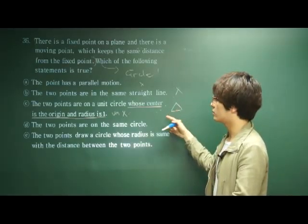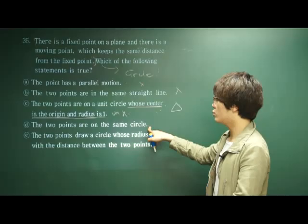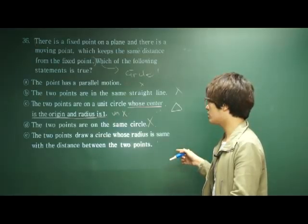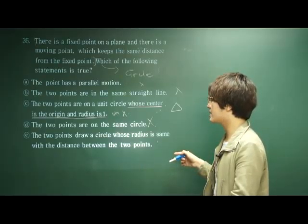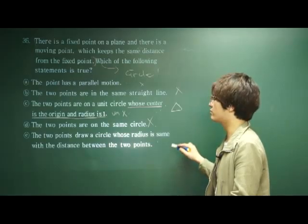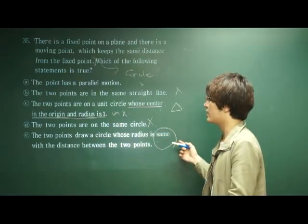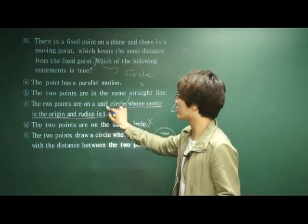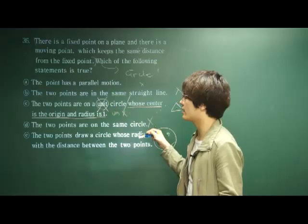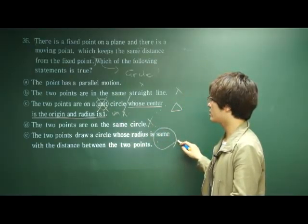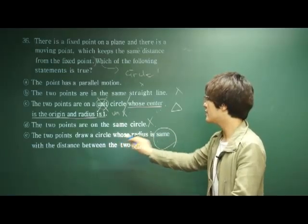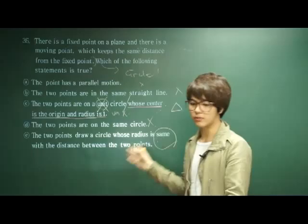D: the two points are on the same circle — nope. E: the two points draw a circle whose radius is the same as the distance between the two points. E is correct. C was half correct — the unit circle part is wrong. So the best answer is E: the two points draw a circle whose radius is the same as the distance between the two points.